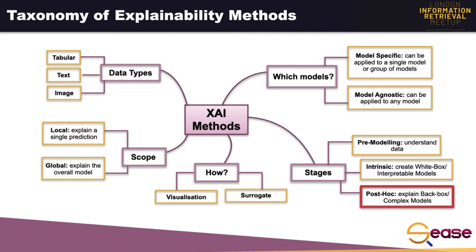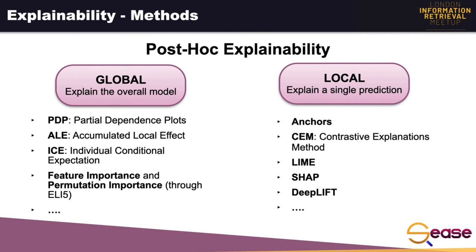When does the explainability occur? There are essentially three stages. Pre-modeling explainability contains all the methodologies applied before building the model, where the goal is to understand and describe data used to develop models. Then we have intrinsic explainability, which can be achieved by designing self-explanatory models that incorporate explainability directly into the model structure — explainability should be an integral part of the system rather than an attachment. And finally, the post-hoc explainability method involves looking at the relationship between feature values and the model's given prediction. We will focus on this stage.